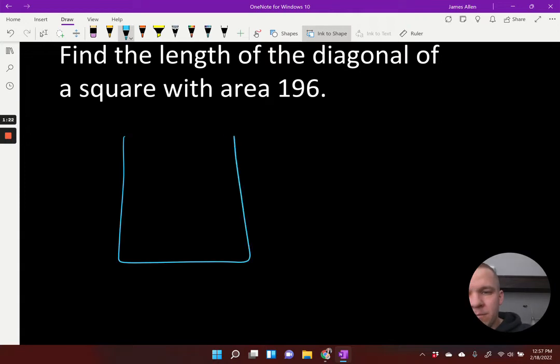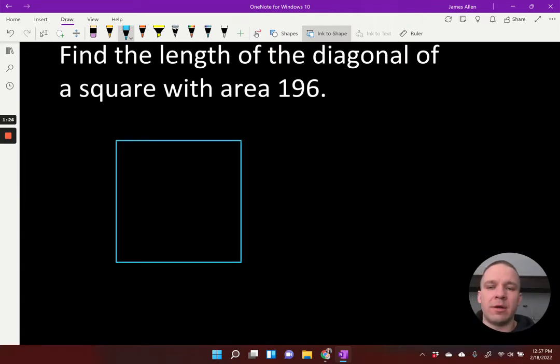let's draw a square. And this time I'm going to remember to do ink to shape. That was a pretty good square. And I was pretty bad at it. All right. I want to find the length of the diagonal if the area is 196. Okay.